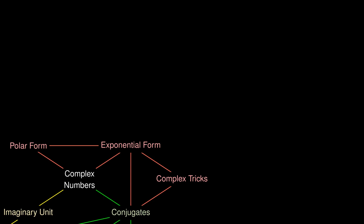These come in handy when we need to calculate, for example, the modulus and argument of e^(5i) + e^(i). The trick is to find the complex number that lies between 5i and i — in this case, 3i.